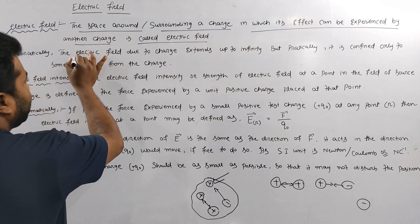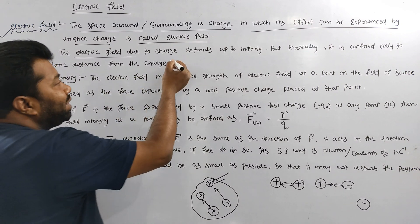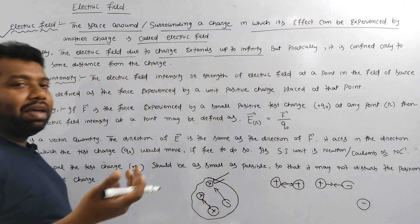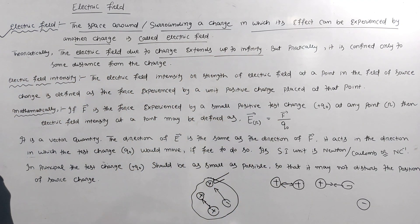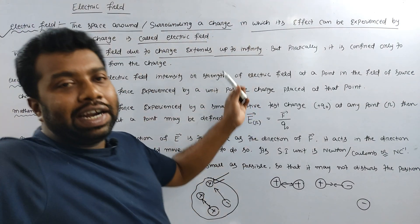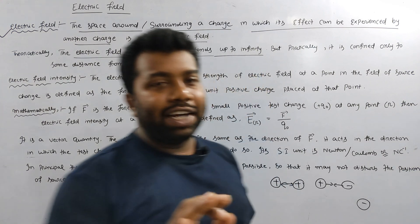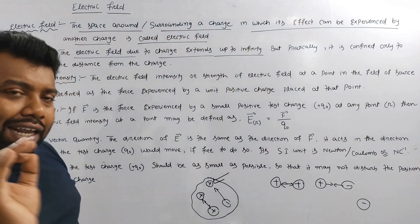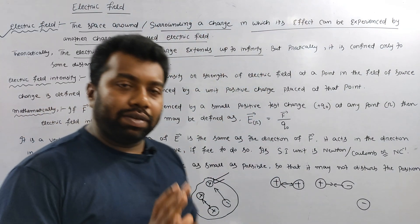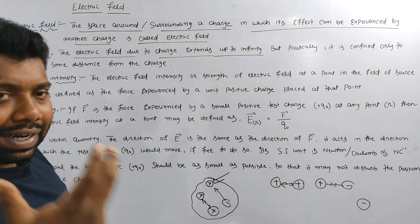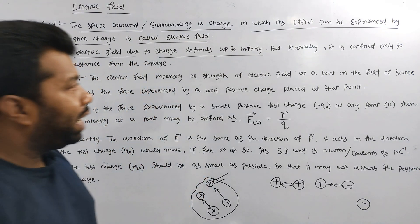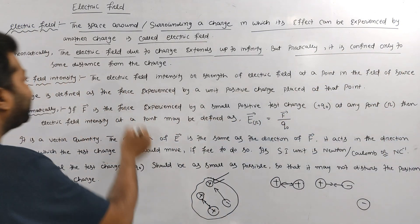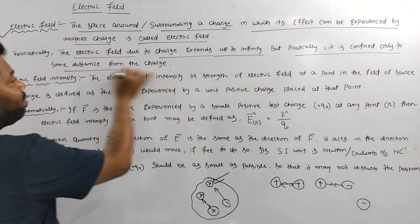Theoretically, the electric field due to a charge exists up to infinity. What is the theoretical concept? The electric field is an infinite area. It is a theoretical concept. But practically, it is not possible — it is confined only to some distance from the charge.